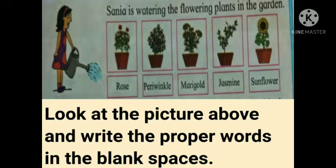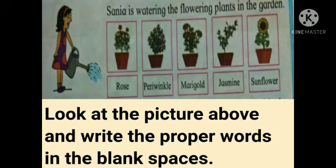Now students, we are going to learn picture reading. A picture is given to us and some questions are given. We have to see the picture and answer the questions. Look at the picture above and write the proper words in the blank spaces. Sanya is watering the flowering plants in the garden. The girl is watering the plants.